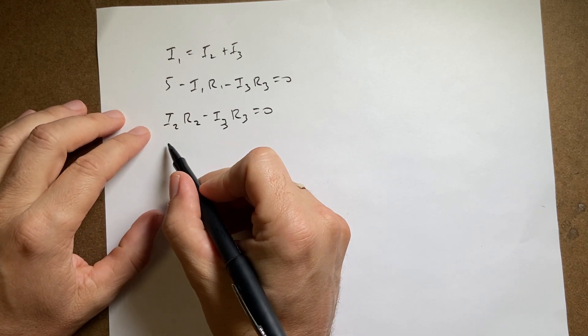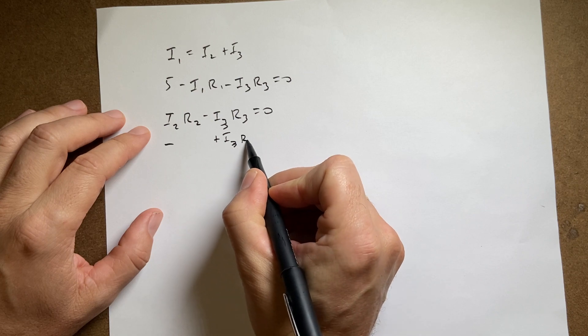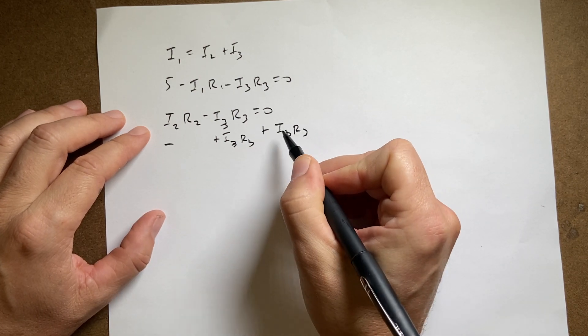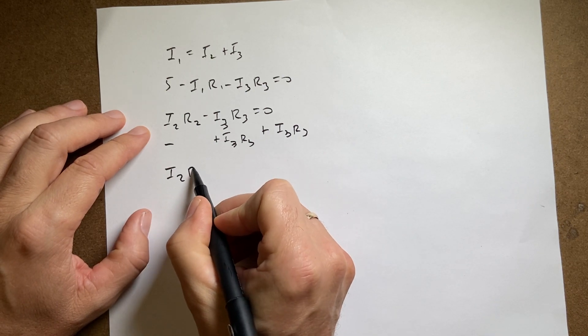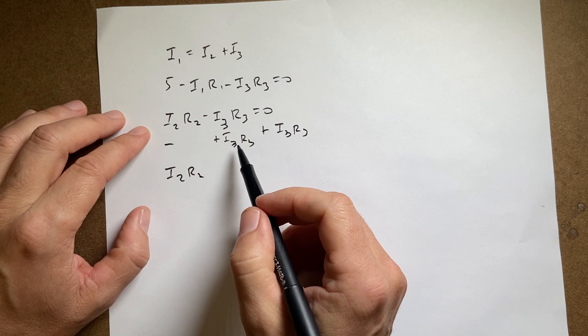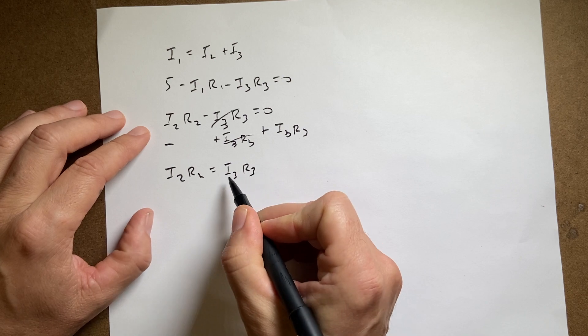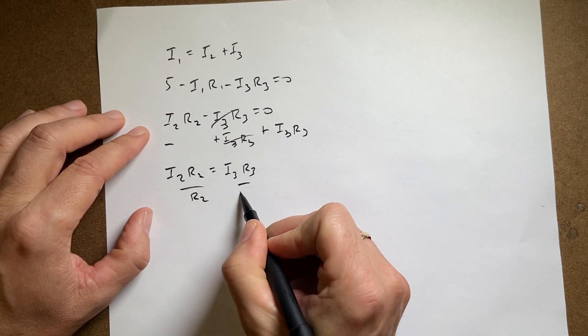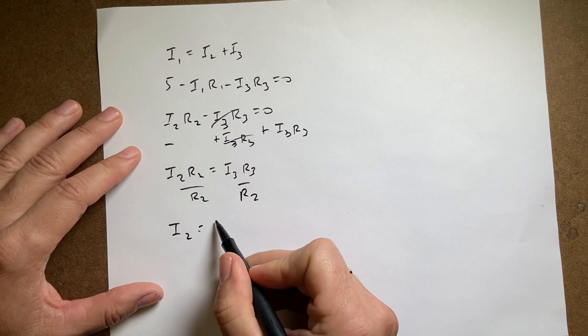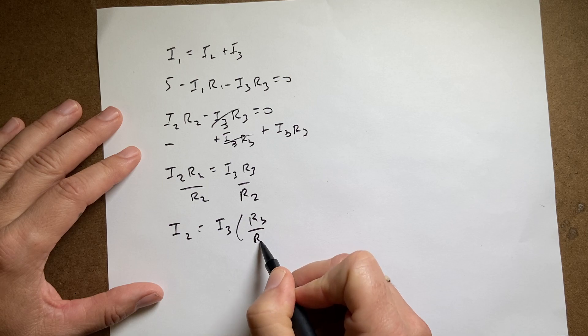So I'm gonna add I3 R3 to both sides. And so I get I2 R2. I get plus I3 minus I3 R3. So those two cancel. And then I get equals I3 R3 divide both sides by R2. Now yes, I'm doing every little step. At least part of it. I2 is equal to I3 times R3 over R2.